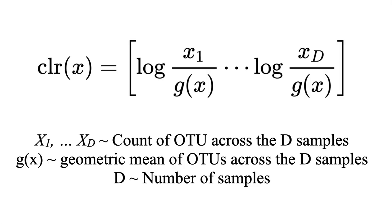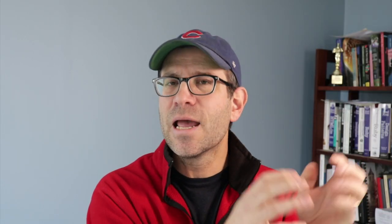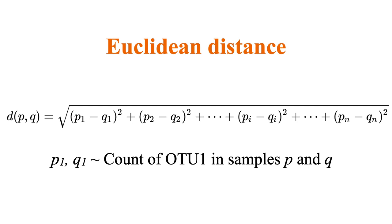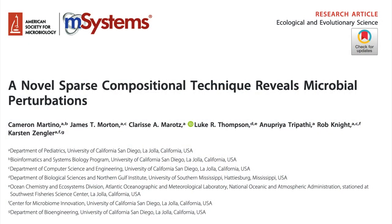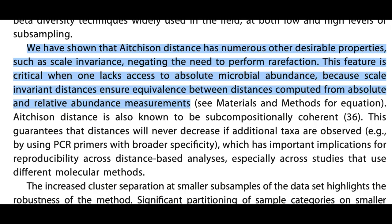The primary approach people use to deal with compositional data is what's called the central log ratio, CLR. You can calculate the CLR for each of your taxa across all your samples, and then use those transformed data to calculate what's called the Aitchison distance. What that really is: if you take your CLR-transformed data and calculate Euclidean distances between your samples, you get the Aitchison distance. This has had some pretty big proponents in the microbiome field.